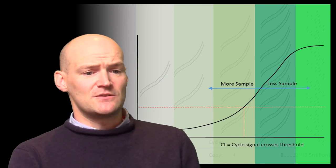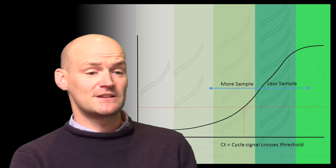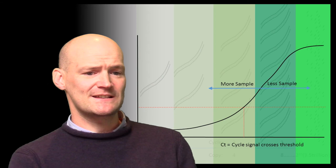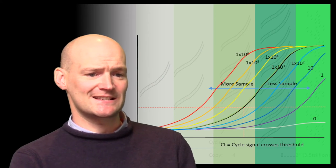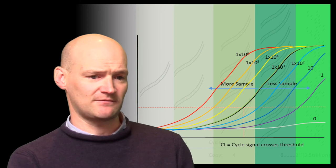The CT value can then be used to give a numerical value of the amount of starting material in the sample, either relative to another gene using what is known as the delta-delta CT method, or as an absolute value calculated using a standard curve generated by a set of standards of known quantities of the target gene, as shown here.